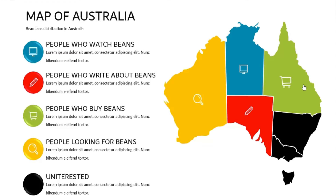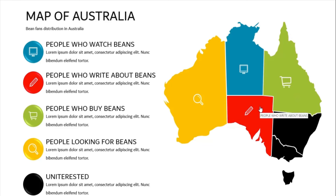Hovering to the green area, we can see a pop-up that says 'people who buy beans.' The blue one says 'people who watch beans.' The red one reads 'people who write about beans.' The black area says 'uninterested.'